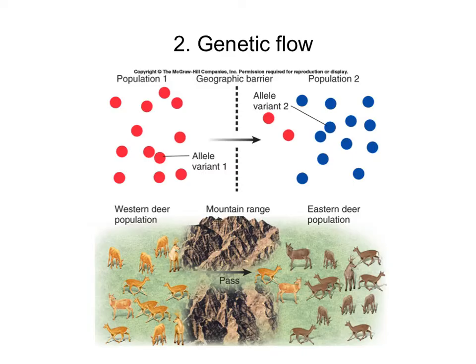We can also have gene flow. This is when one population has one allele composition — let's say they have a red allele — and a second population has only the blue allele. But if individuals migrate from one population to the other, they'll bring that allele that was not present. So with the deer example, light brown deer migrate into the dark brown deer population, and now they have alleles that were not present in that population before.